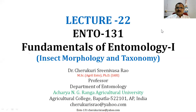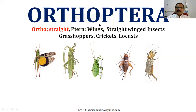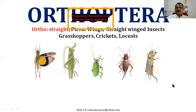This is Lecture 22, in which we are trying to understand the important characters of insects under Orthoptera. Orthoptera means 'straight wings' — 'ortho' means straight and 'tera' means wings. The wings are held straight to the body during rest, as you can clearly see in grasshoppers, locusts, crickets, and mole crickets.